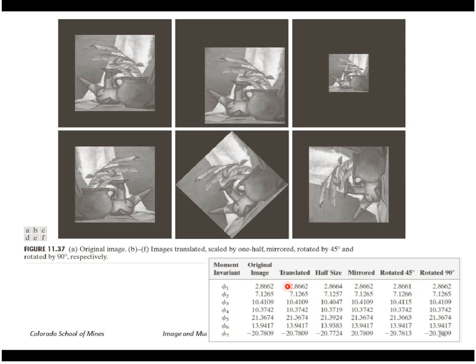So φ_1 is pretty much 2.866 all the way across. Same for φ_2, φ_3. The only one that isn't invariant is φ_7. And that is different for this mirrored image as shown here. So instead of a minus 20, it's a plus 20. So basically these moment invariants are not invariant to mirroring, just to translation, scale, and rotation.